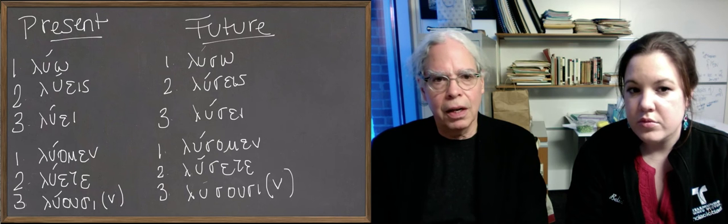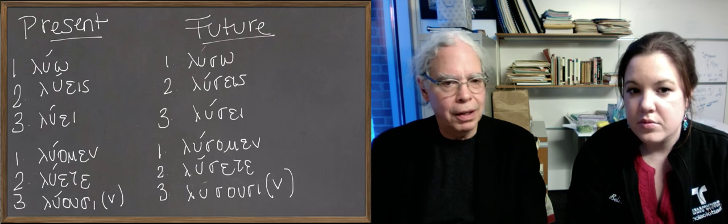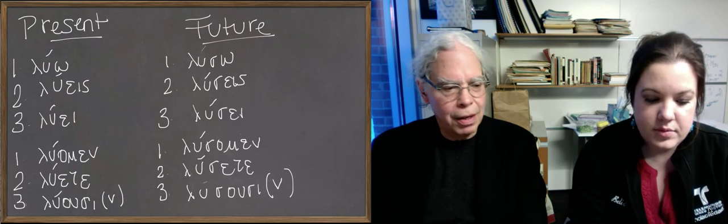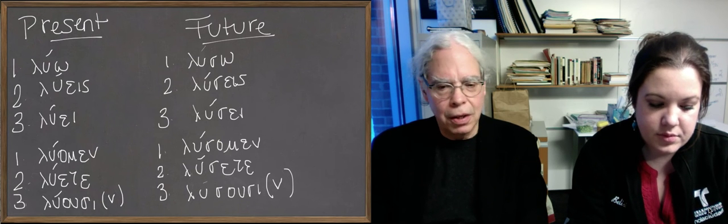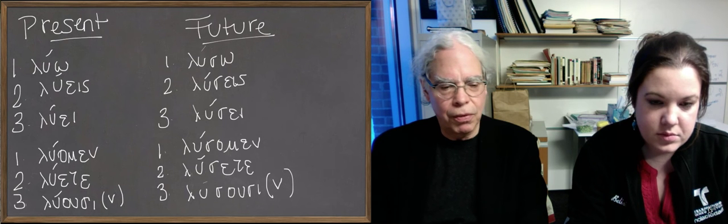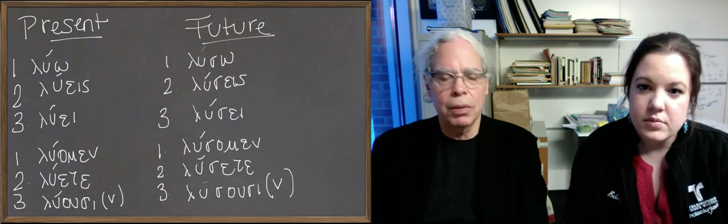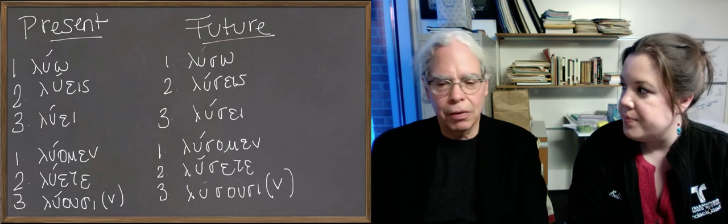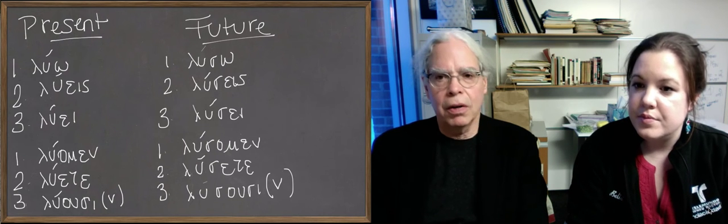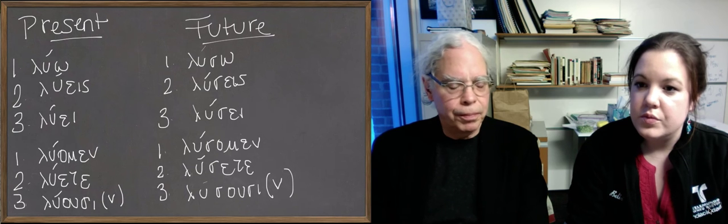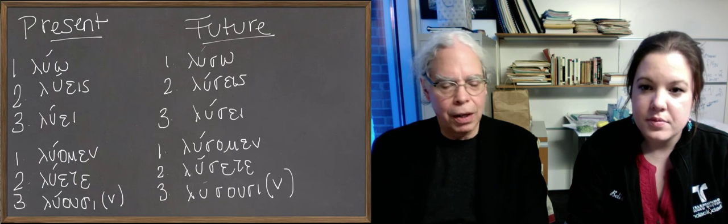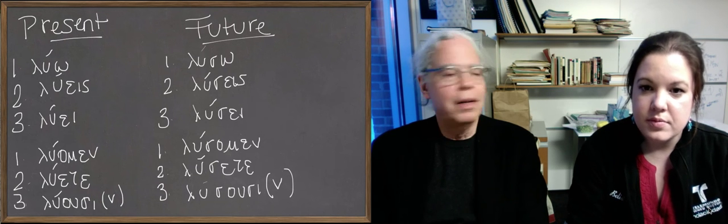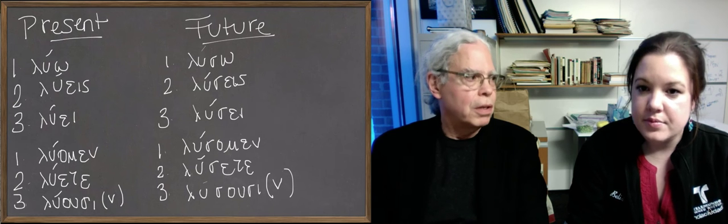To make the future you add that s and you get what you see on the blackboard. I think there's one other trick to it. If the stem of the verb doesn't end like lu o and paideu o with a vowel, but with a consonant as in pempo—pempo is the easiest of all cases. If the stem is pimp, then you add an s to it. You write p plus s and you get a psi.